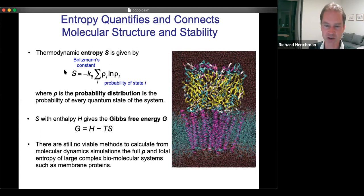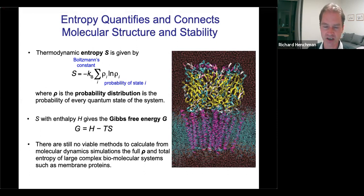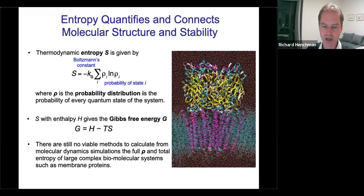If you can get entropy, you can calculate the Gibbs free energy directly from thermodynamics. The Gibbs energy, which governs stability, equals the enthalpy minus T times S. Enthalpy is straightforward to get from a simulation, apart from convergence noise issues. However, for typical biomolecular systems there is still no general viable method to calculate the entropy over the whole system.